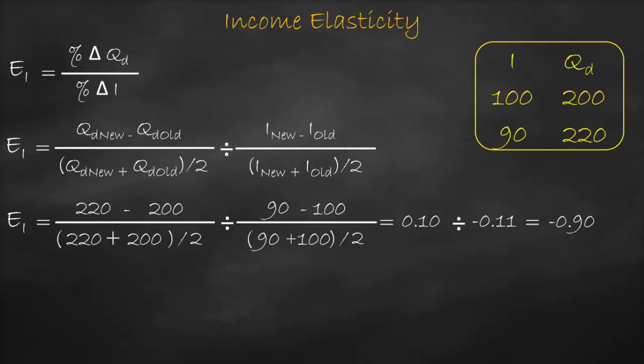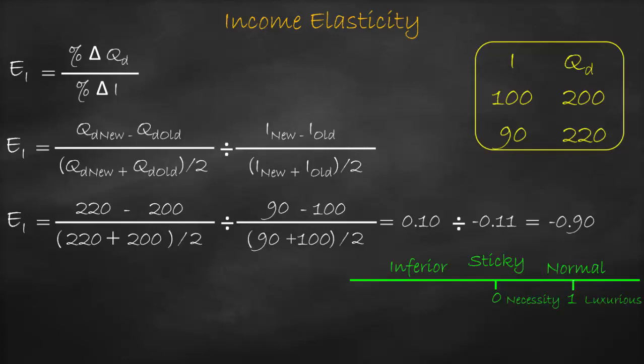This gives us negative 0.9. Our benchmark for income elasticity is zero: if it's zero, this good is sticky; bigger than zero, it's a normal good; lower than zero, it's an inferior good. A normal good can also be classified as necessity or luxurious — with a benchmark of 1: between 0 and 1 is necessity, bigger than 1 is luxurious.